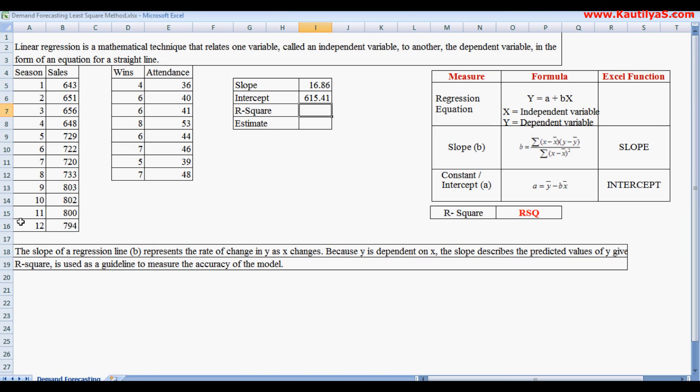For this we use equals to RSQ, again known Y values and X values. The strength of association is 0.89, which means 89 percent.